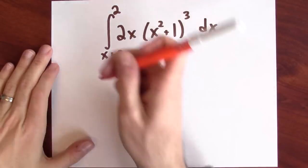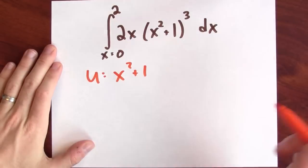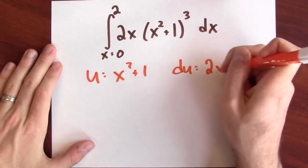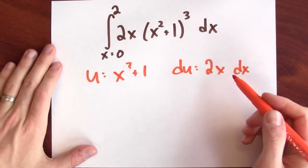We can do it with u-substitution. The substitution that I want to make is u equals x squared plus 1, and in that case du, the derivative of this is 2x dx, and that's great because I've got a 2x dx right there.